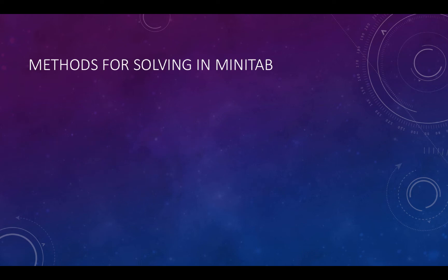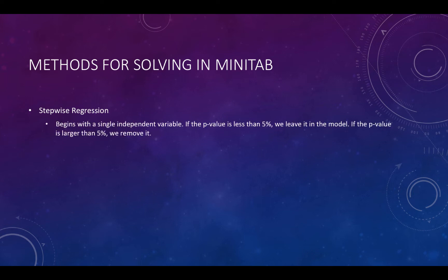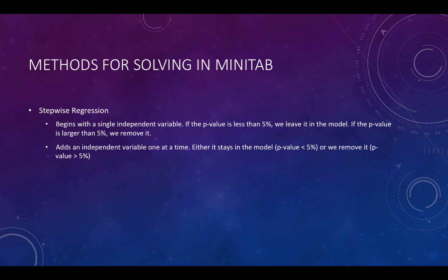One method for solving in Minitab is stepwise regression. It begins with a single independent variable — we put one x into the model. If the p-value is less than 5%, we leave it in the model; if the p-value is larger than 5%, we remove it. Then we add another independent variable, adding them one at a time, and each either stays in or is removed based on the 5% threshold.